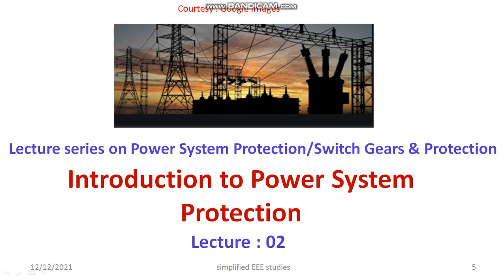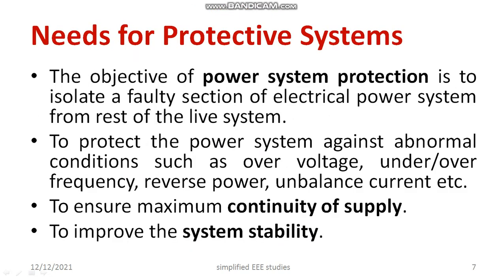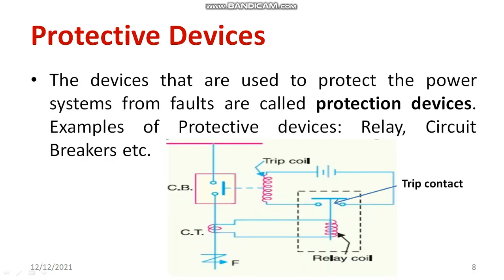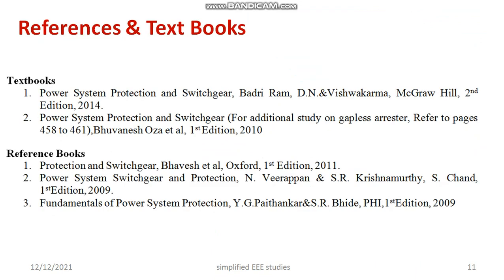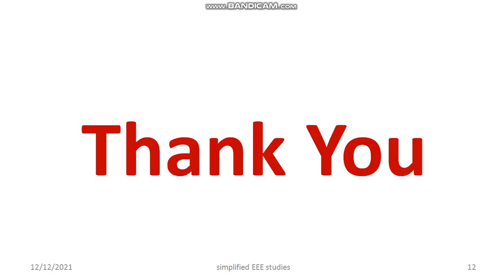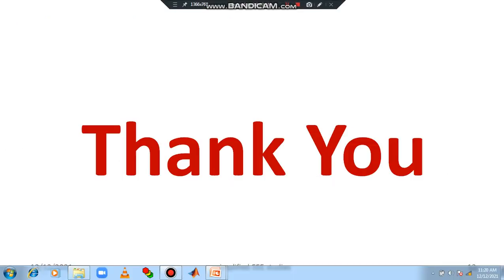In this session, I have discussed the importance of power system protection and why it is required. I listed protective devices such as relays and circuit breakers, and showed an example of how a relay and circuit breaker operate for a simple bus. In the coming session, I will discuss the causes of fault. If you have any questions, put them in the comment box. Thank you for watching.